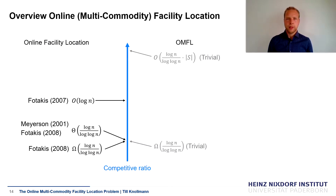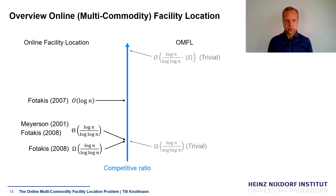So what do we know about this problem in our case? Actually, nearly nothing. We know some things from the online facility location problem. Among others, we know there is a lower bound by Fotakis presented in 2008, a randomized algorithm by Meyerson and a deterministic algorithm by Fotakis which both meet this lower bound. There is also a deterministic algorithm by Fotakis with an upper bound of O(log n). We can trivially take the lower bound from online facility location for our problem as well, since we generalize the problem. You could also run a separate instance of facility location for each commodity to get a trivial upper bound.